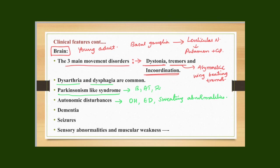Because copper also gets deposited in the cortex, the patient will suffer with dementia, memory loss, and seizures. However, in Wilson's disease, the sensory tracts and the pyramidal tracts are spared. So muscle weakness and sensory abnormalities are uncommon. This is an important MCQ point.